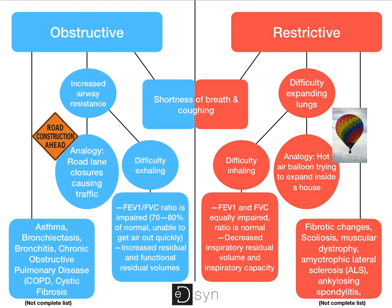There are many diseases that can affect the lungs, and generally they're divided into how they affect lung function. They can either be obstructive or restrictive. Obstructive lung diseases are characterized by increased airway resistance, and restrictive lung diseases are characterized by difficulty expanding the lungs. This can be compared to a road that is closed by a blockage causing a traffic jam. What happens in an obstructive lung disease is that the airways contract and make it difficult to exhale breath.